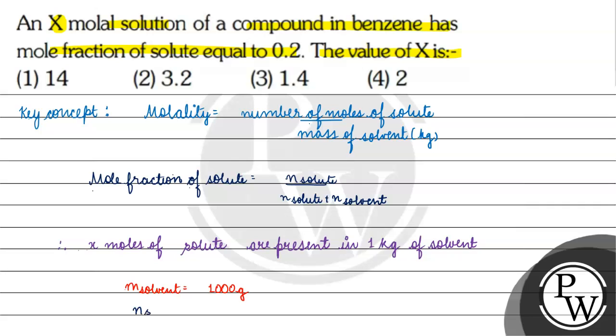Now, number of moles of solvent will be equal to 1000, which is the mass, divided by 78 grams per mole. 78 grams per mole is the molecular mass of benzene, which is C6H6: 12 times 6 plus 6 times 1 equals 78 grams per mole. If we divide 1000 by 78, we get 12.82 moles. This is the number of moles of solvent.